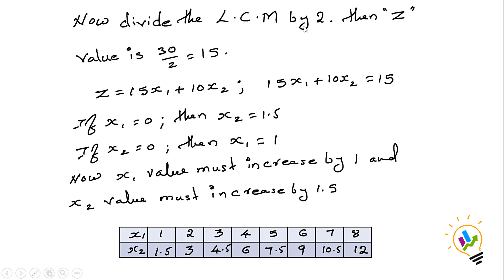Now divide the LCM by 2. The reason for dividing by 2 is that the units on the graph range from 1 to 8 or maximum 1 to 12, so dividing keeps the plotted lines within that range. If the range were 200 or 300, you could multiply 30 by 2 instead. In this case 30 divided by 2 equals 15, so substitute Z with 15, giving the equation 15X1 plus 10X2 equal to 15.